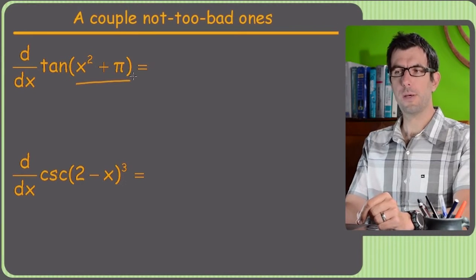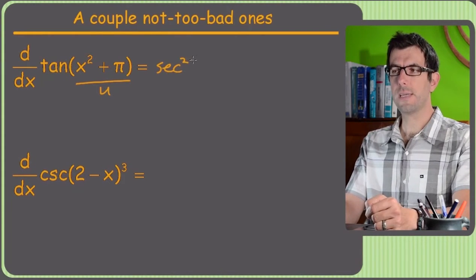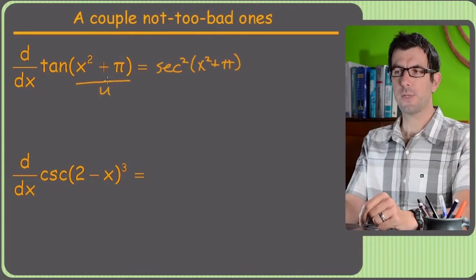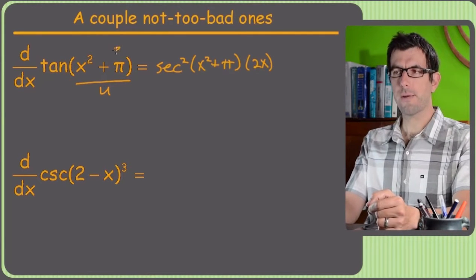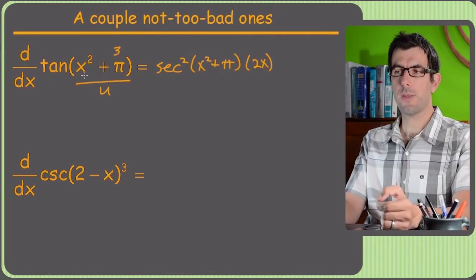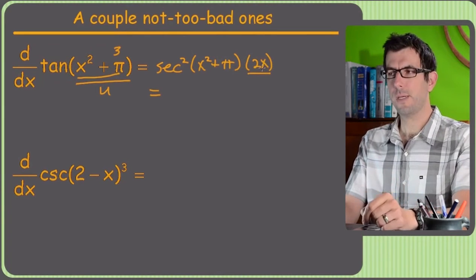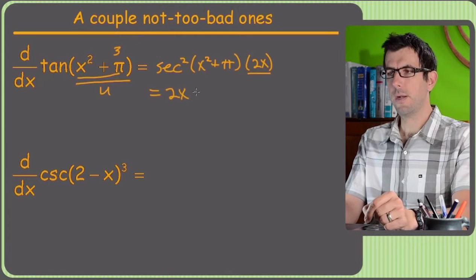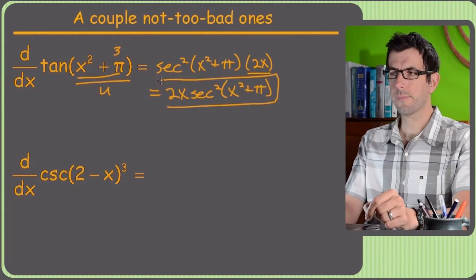Derivative of tangent of (x squared plus pi). Call this u. Derivative of tangent is secant squared of that same stuff: secant squared of (x squared plus pi), times u-prime. U-prime is the derivative of (x squared plus pi), which is just 2x — pi is a constant, derivative is zero. Moving 2x out front: 2x times secant squared of (x squared plus pi).